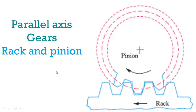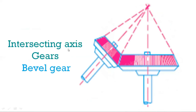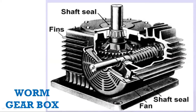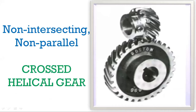A rack and pinion: the rack is nothing but a gear of infinite radius where the curvature is zero, and this gear of certain curvature engages with it. For intersecting gears, bevel gears are used — this is the driven gear axis and this is the driving gear axis, both intersecting. For non-intersecting perpendicular axis, a worm wheel is used, which you might have seen in slotting machines for indexing mechanisms. For non-intersecting non-parallel shafts, cross helical gears are used.